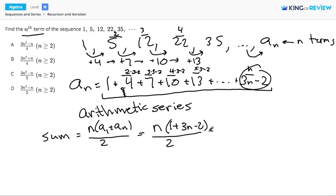So, let's see if we can simplify this. This is n times 3n. 1 minus 2 is negative 1 over 2. And if we multiply this out, this is 3n squared minus n over 2. And that perfectly matches the expression in answer choice C. So, we know that C must be our answer. Thanks for watching!